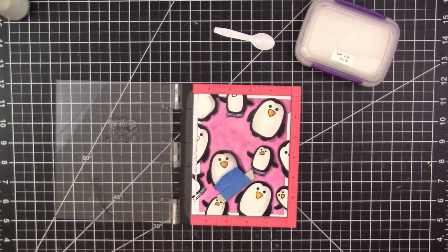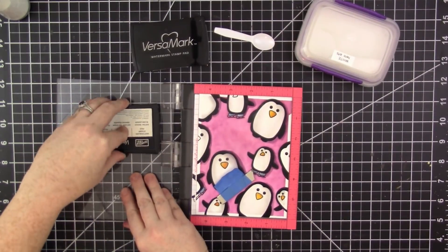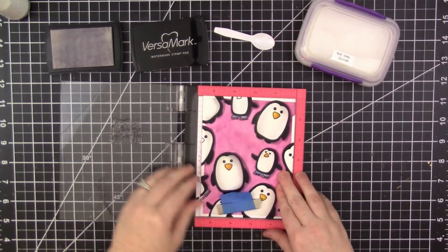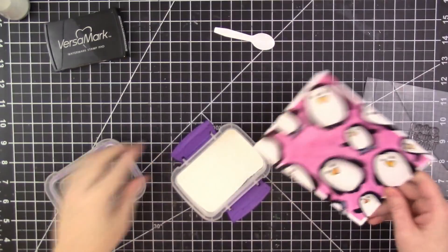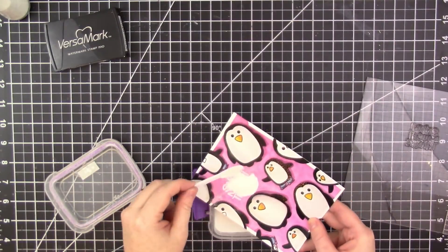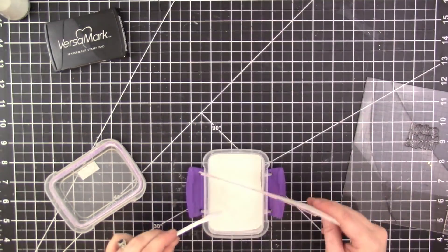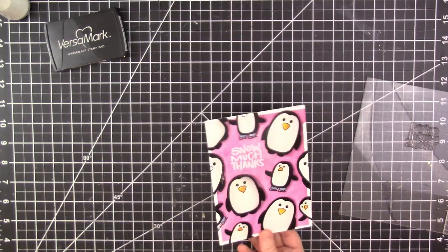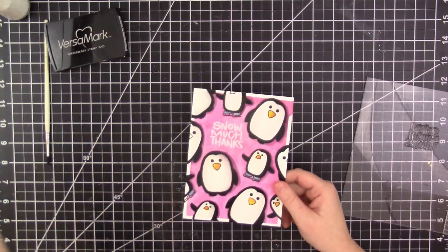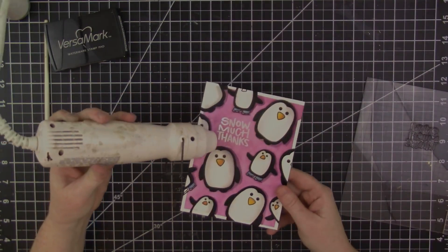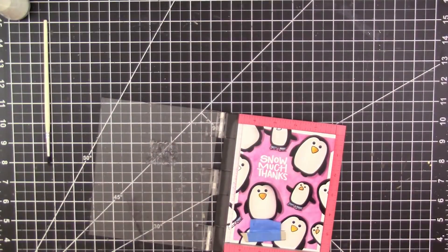Then I'm going to stamp one of the sentiments from the stamp set. It reads 'Snow Much Thanks' and I'll stamp it with Versamark ink and apply Hero Arts white embossing powder. I actually heat the powder and then decide that I'm going to stamp it again.